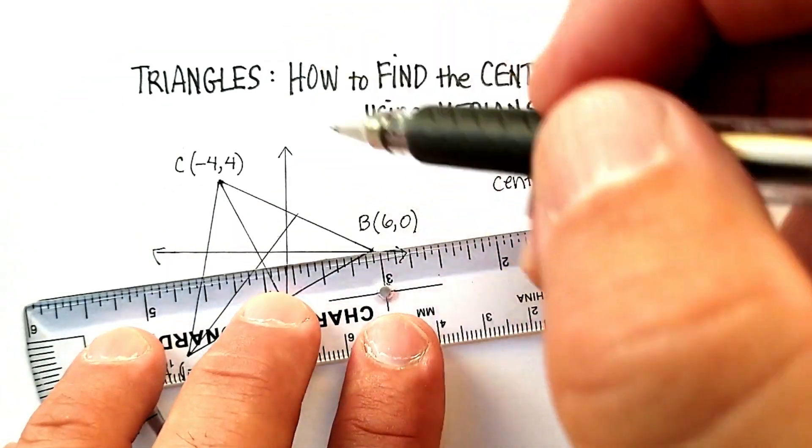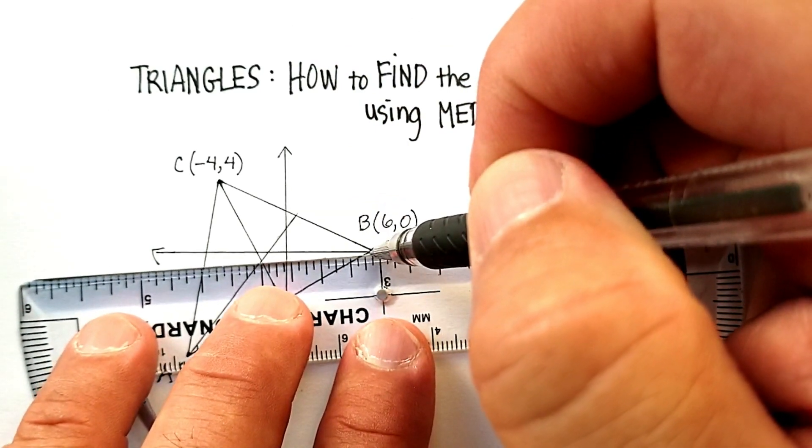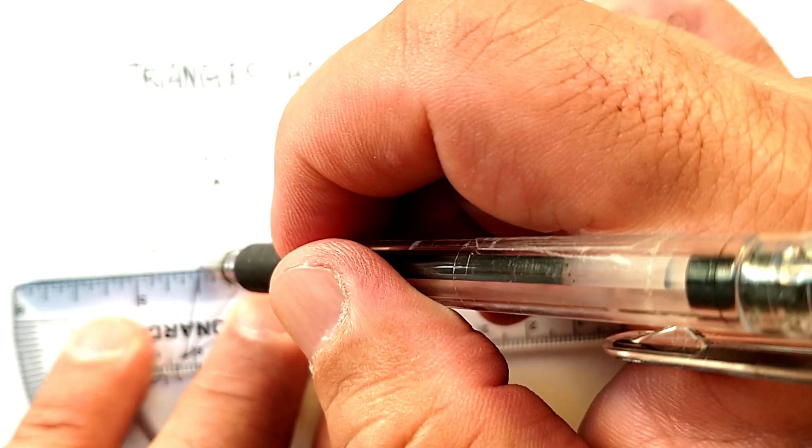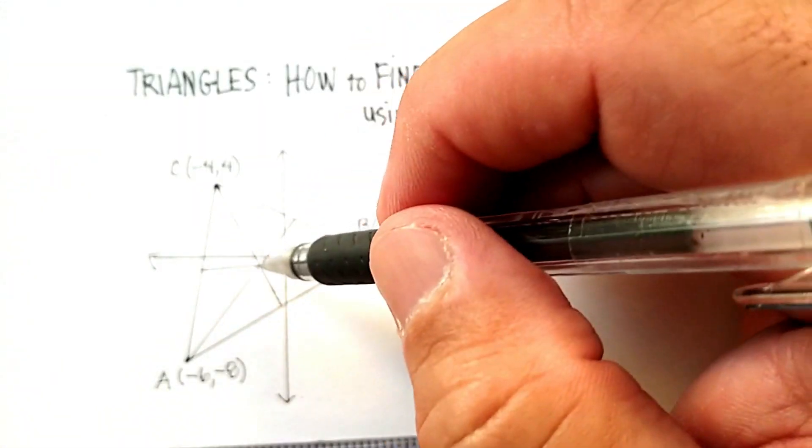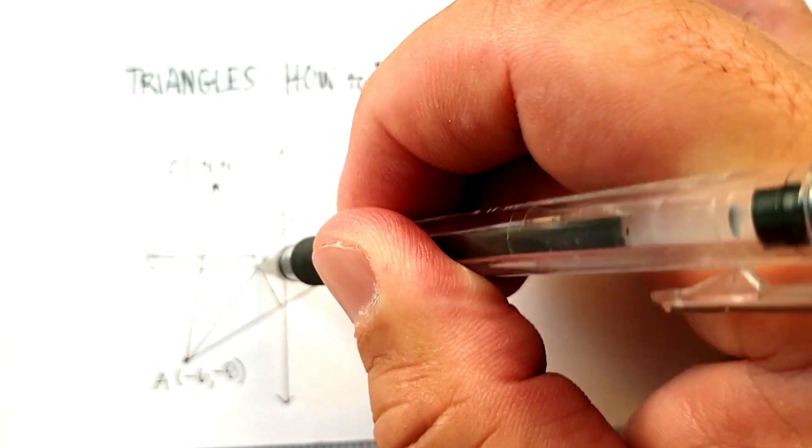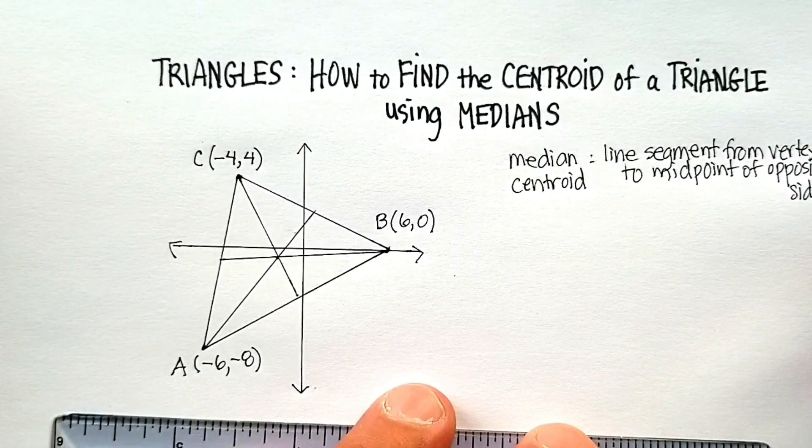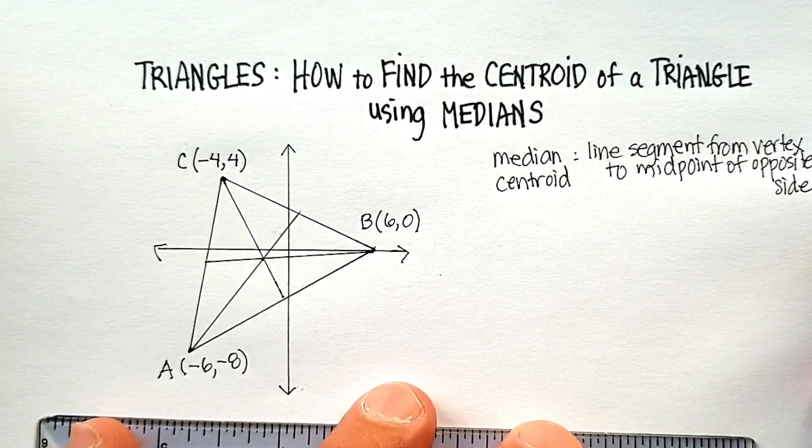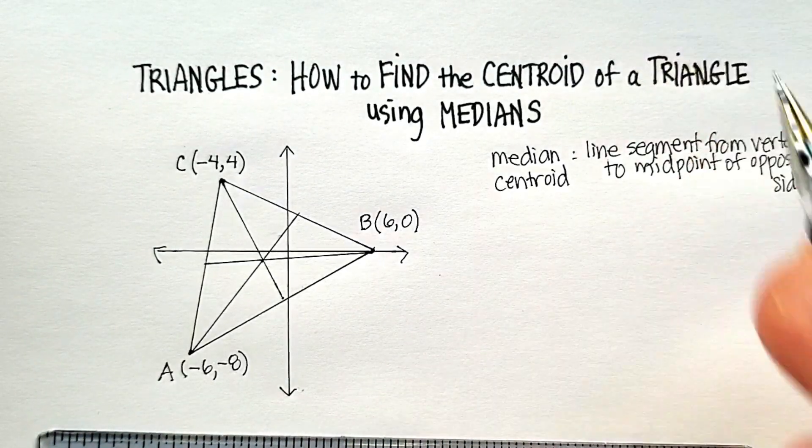And then the same thing for this one. Looks like it goes from there to, I don't know, right about there. So, from the vertex to the midpoint of the opposite side. So, it looks like it's approximately there in a triangle. Now, if you're a really good drawer, you could be able to do that precisely. But we have to try to do this mathematically.